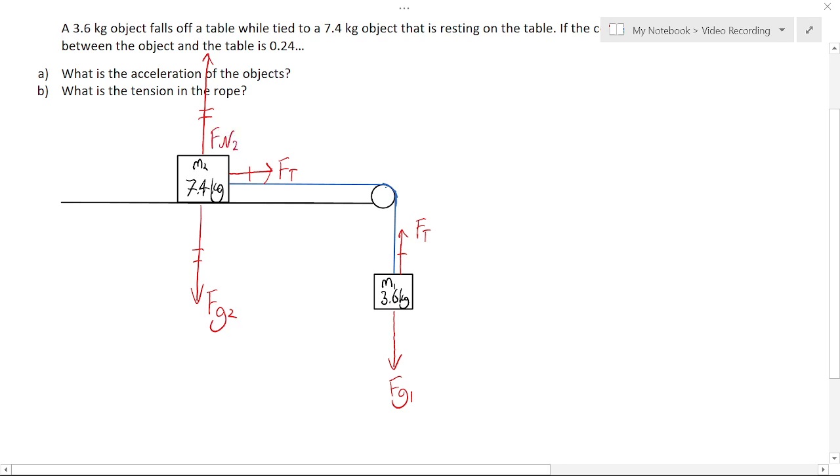So those are bigger than Fg1 because this mass is heavier, but they're balancing with each other.